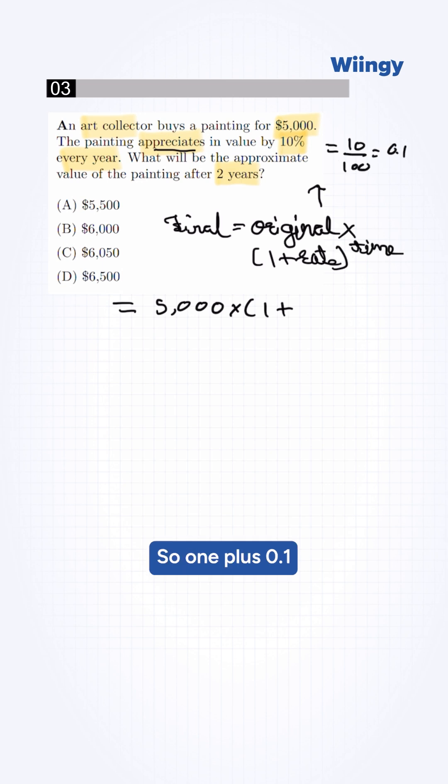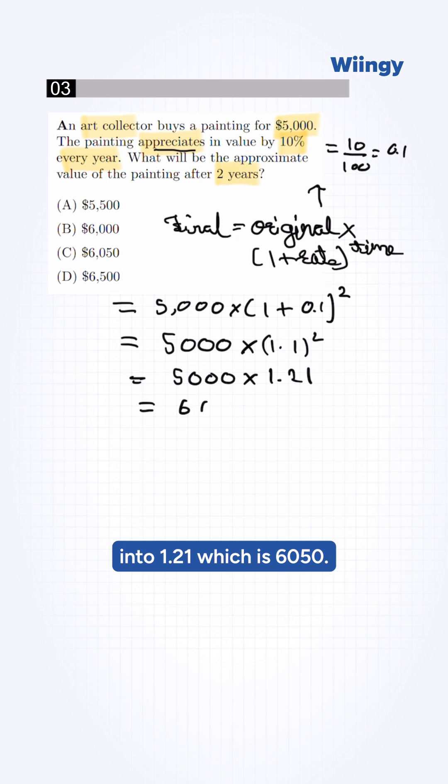So 1 plus 0.1 whole square, 5,000 times 1.1 squared. It will be 5,000 times 1.21, which is 6,050.